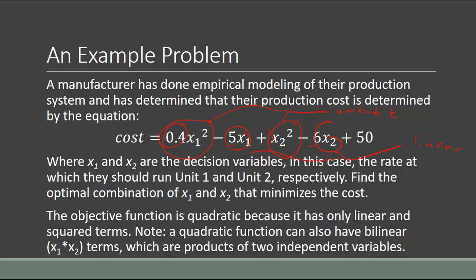In this problem, x1 and x2 are the decision variables — specifically, the rates at which to run unit 1 and unit 2. We want to find the combination of x1 and x2 that results in minimal cost. The objective function is quadratic because it has only linear and squared terms. It could also have bilinear terms like 10·x1·x2, but this particular problem does not, so the corresponding parts of the H matrix will be zeros.